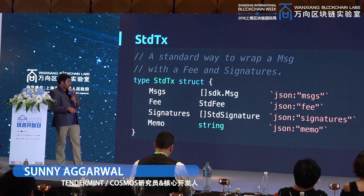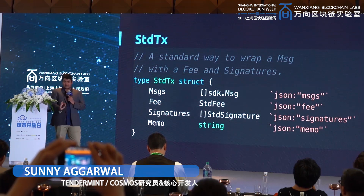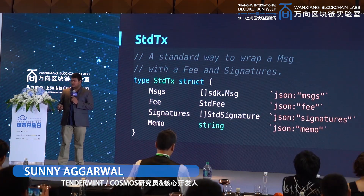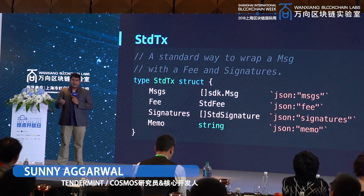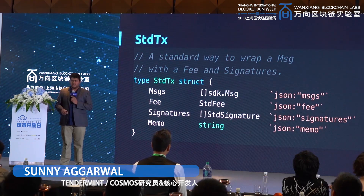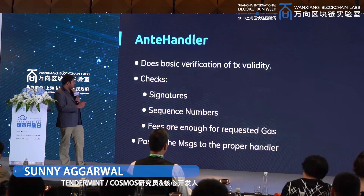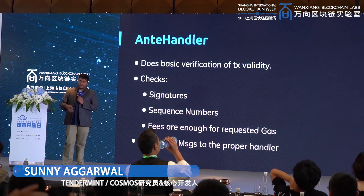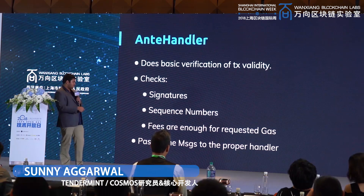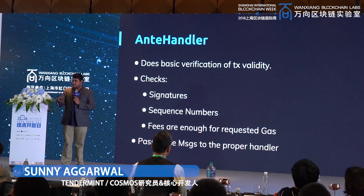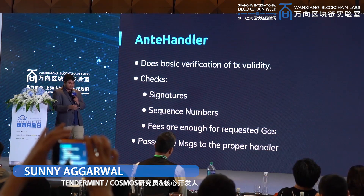What we have is what's called the standard transaction, which has a couple of things. Primarily it's the messages, which we'll get into in a minute. You have a fee — a blockchain has some sort of transaction fees. You have signatures, and then you have a memo where you can add an extra piece of data, kind of like OP_RETURN in Bitcoin — you can put the timestamp, today's date, or a love note, whatever you want. One of the things we also handle for you is the ante-handler. It does all sorts of stuff like checking the signatures on the transaction, checking the sequence numbers or nonces as they're called in Ethereum, and doing all the fees and gas checking for you.